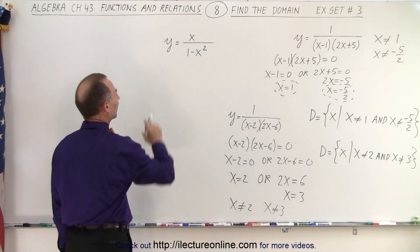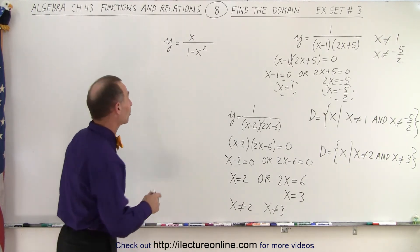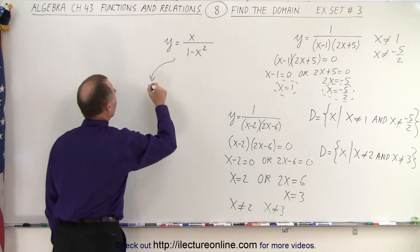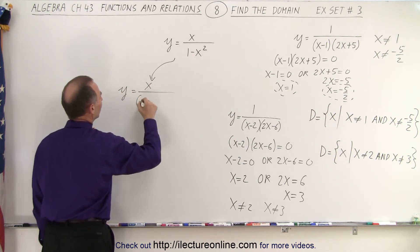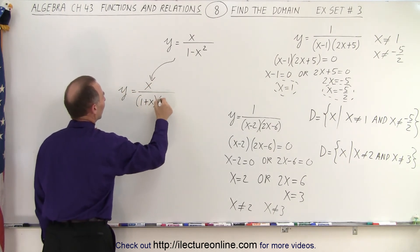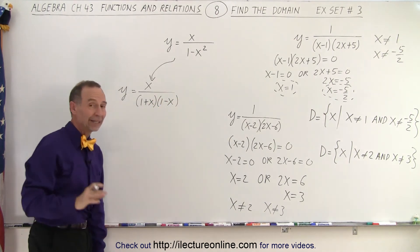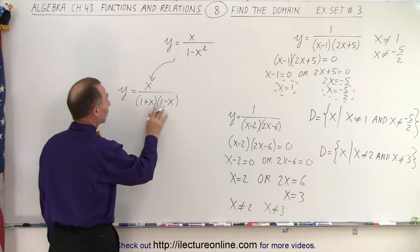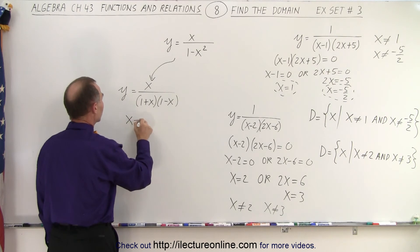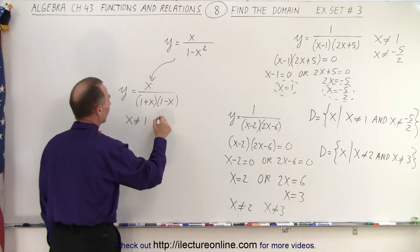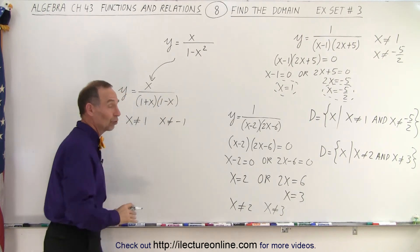And here we have something interesting. We have a binomial, but we need to factor this one first. This can be written as y equals x divided by 1 plus x, times 1 minus x. Once we write it in factored form, we can clearly see that x should not equal 1 and x should not equal negative 1. If x equals 1, then 1 minus 1 is 0, and if x is negative 1, then 1 plus negative 1 is 0.